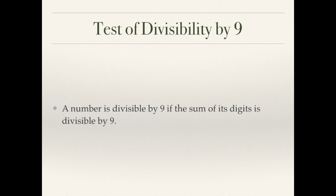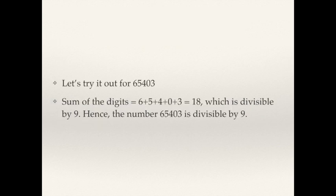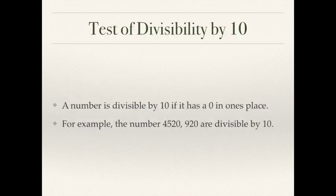Test of divisibility by 9: this is exactly the same as the test for divisibility by 3. Add all the digits and see whether the sum is a multiple of 9. If it is, then the number is also divisible by 9. For example, 65,403 is divisible by 9. The divisibility tests for 3 and 9 follow the same method. For divisibility by 10, the favourite of everyone: a number is divisible by 10 if it has a 0 in the one's place — the most straightforward rule.